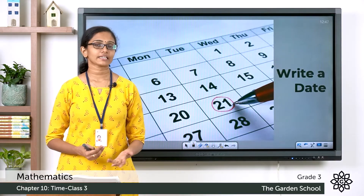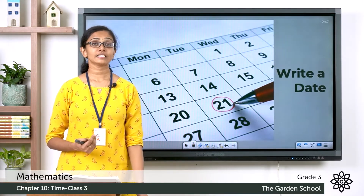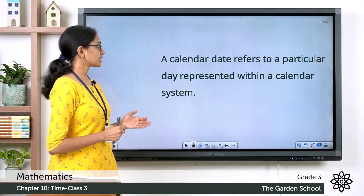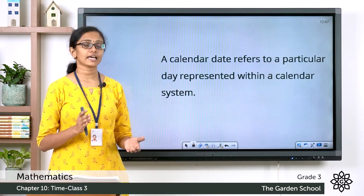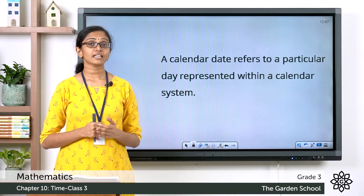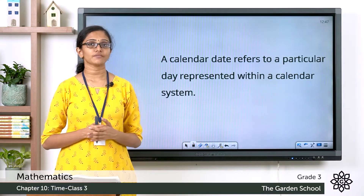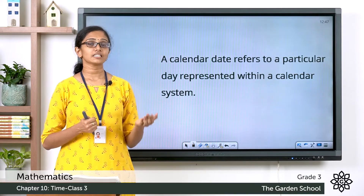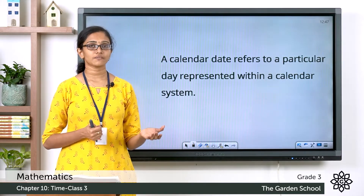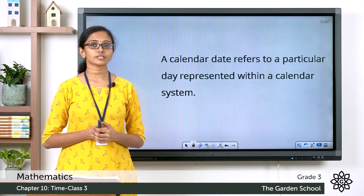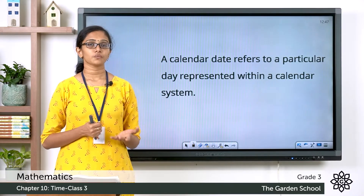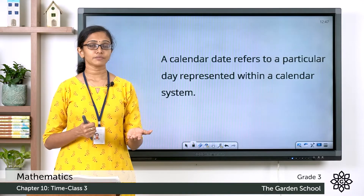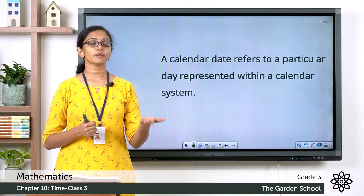What do you mean by a calendar date? A calendar date refers to a particular day represented within a calendar system. A calendar date helps us to identify a specific day in a year, or you can say it is a designation given to a specific day within a calendar system. For example, your date of birth helps to identify the day on which you were born.